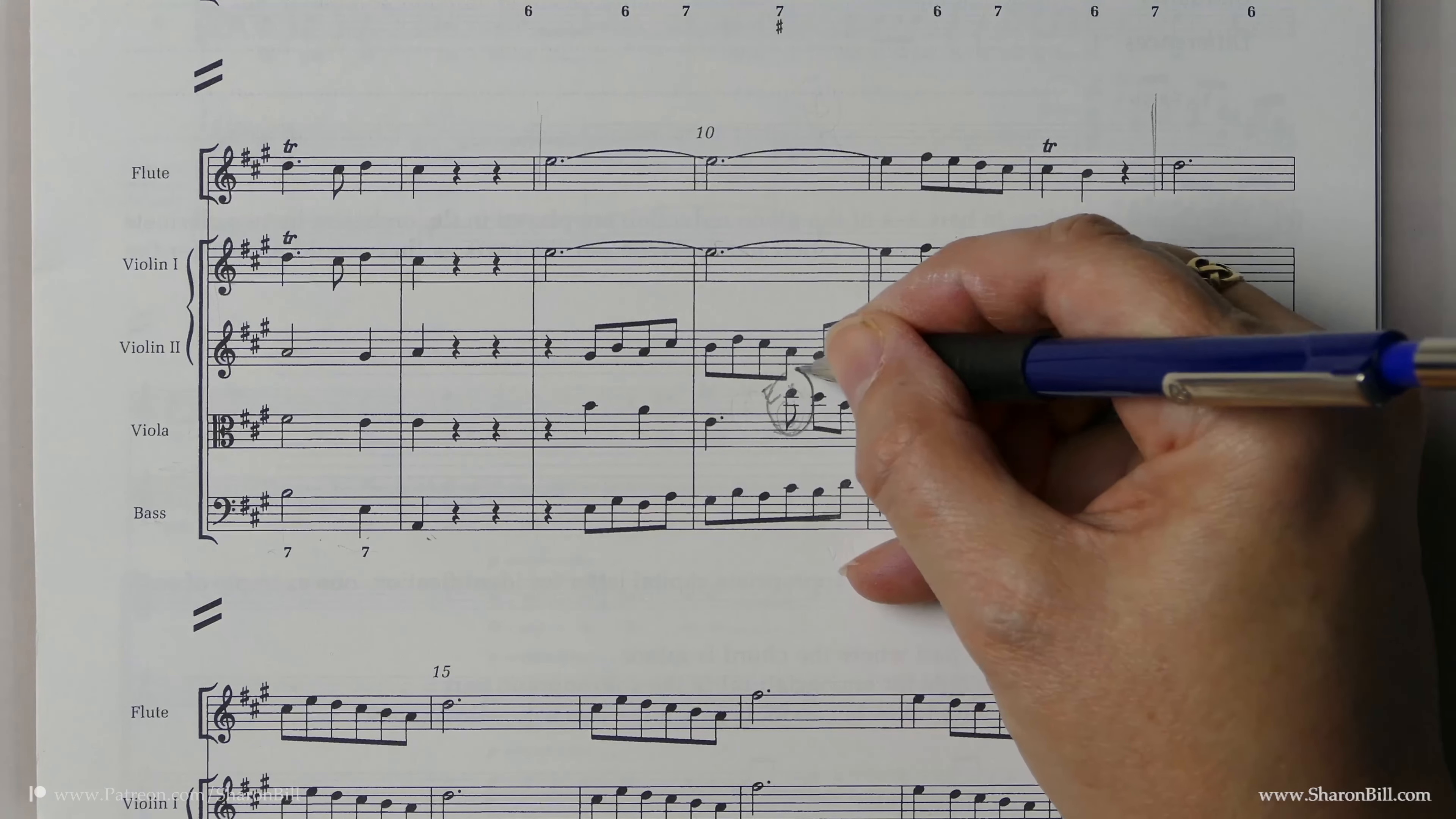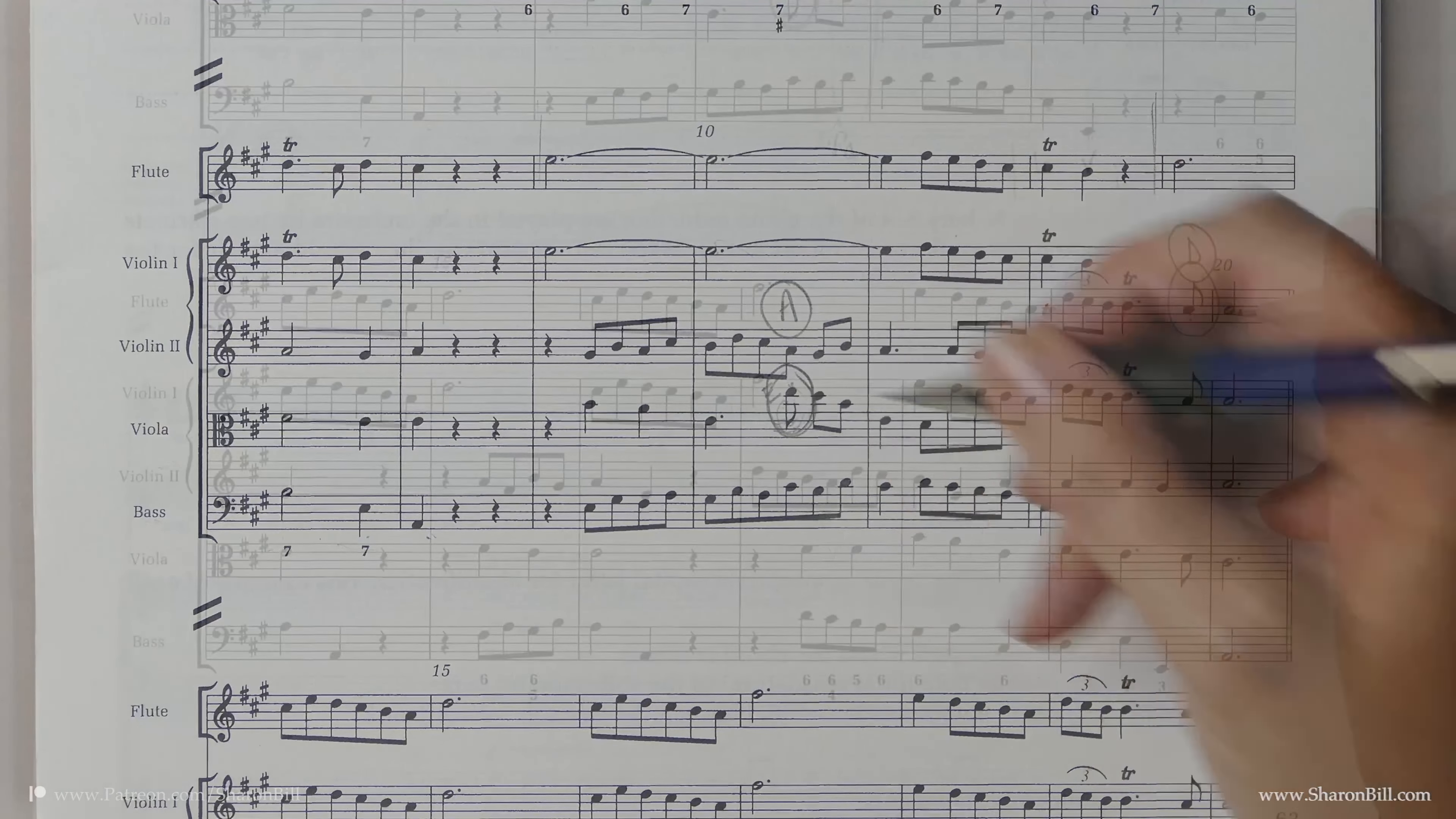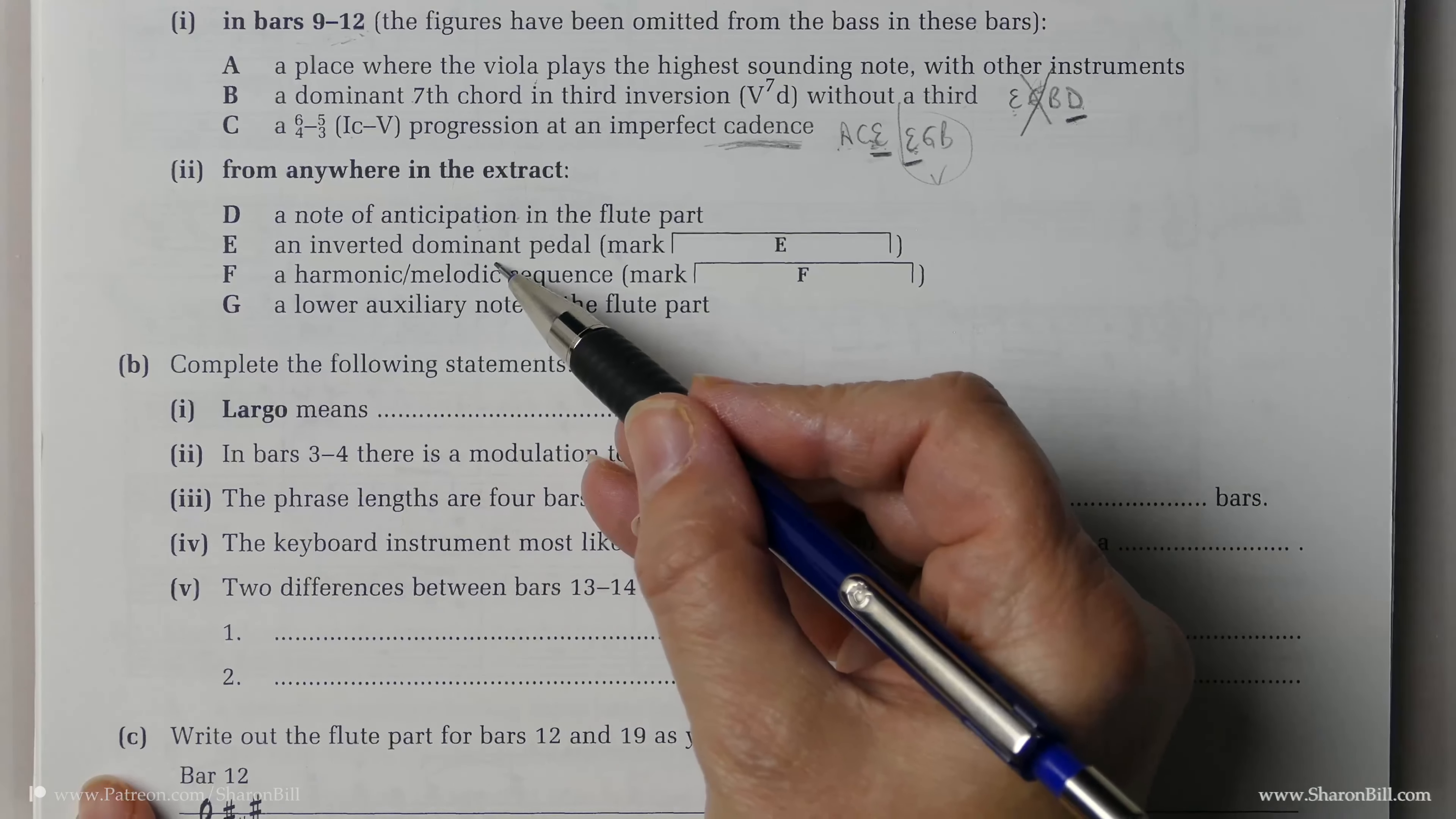And so that is A. We're on now. What do we need to find for E? An inverted dominant pedal.